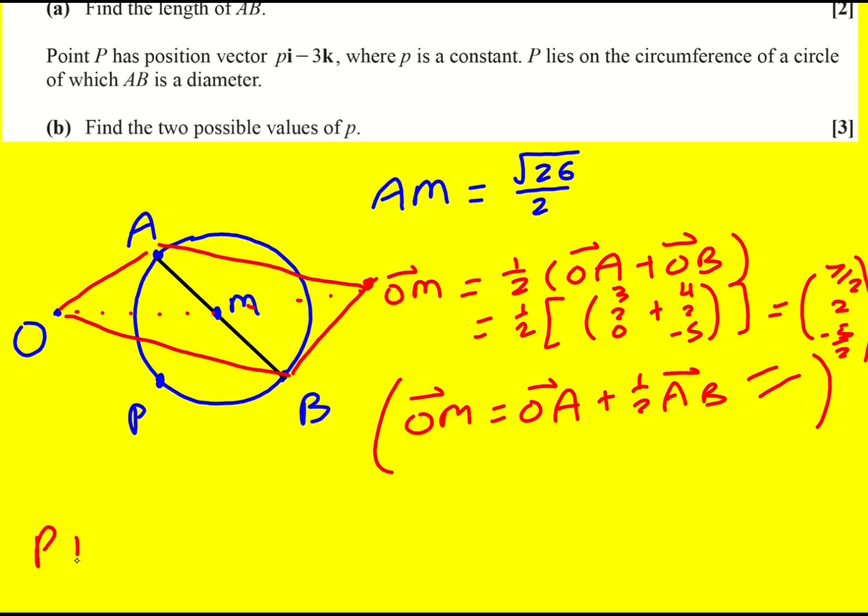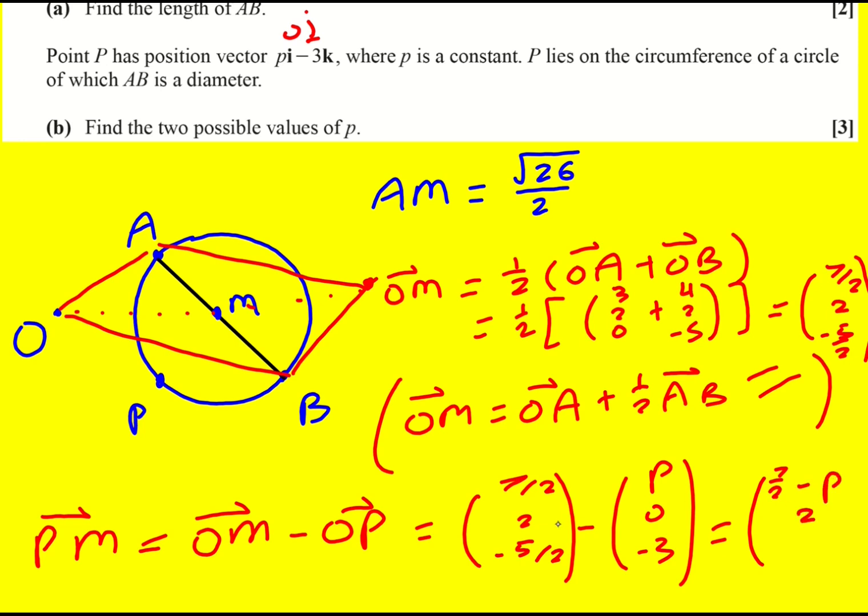So we have OM. And now I can find out what PM is. Because PM is going to be OM minus OP. I'm using that second minus first idea. So seven over two, two, minus five over two, minus. Actually, let me write it as a vector. You can subtract them as normal, but I just don't want to rush it. So p, I'm going to write zero j, just remind myself. So zero minus three. And that gives seven over two minus p, two minus five over two, minus minus three, that's going to become a half.